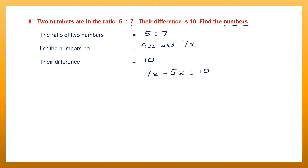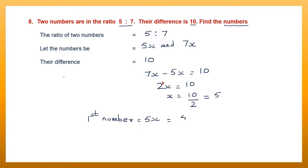7x minus 5x equals 10. Let's find x. 7 minus 5 is 2, so 2x is equal to 10. When I transpose 2 to the right hand side, multiplication becomes division. So x is equal to 5. The first number is 5x, that means 5 into x, and we have found x to be 5. So this will be 5 into 5, which is 25.